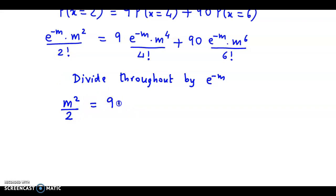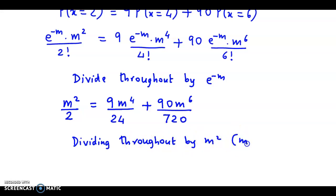equals 9m^4 where 4 factorial is 24, plus 90m^6 where 6 factorial is 720.